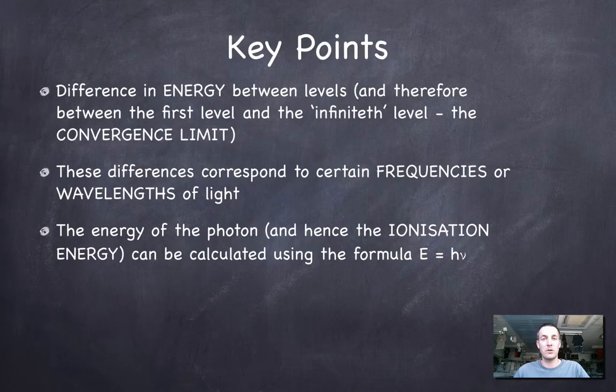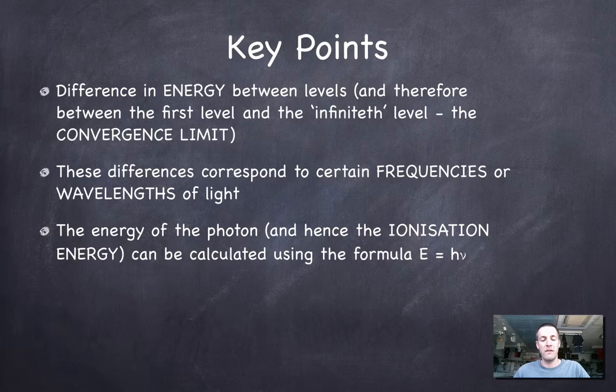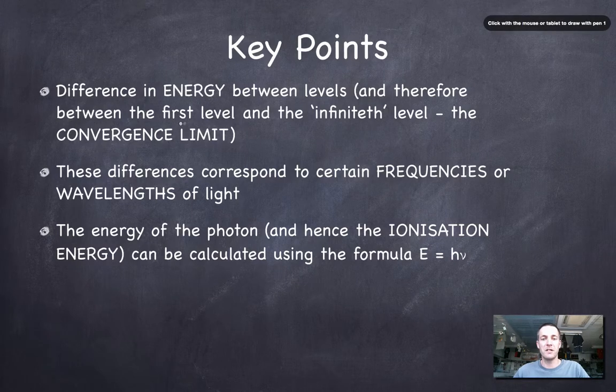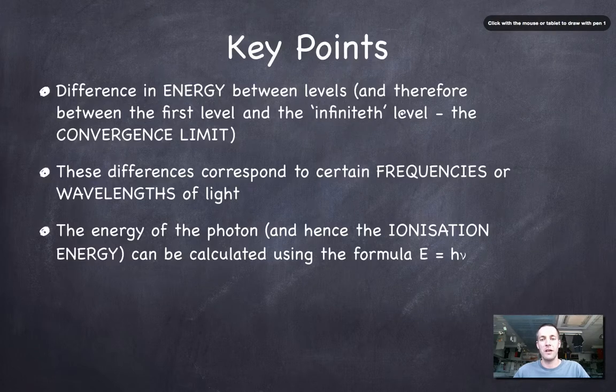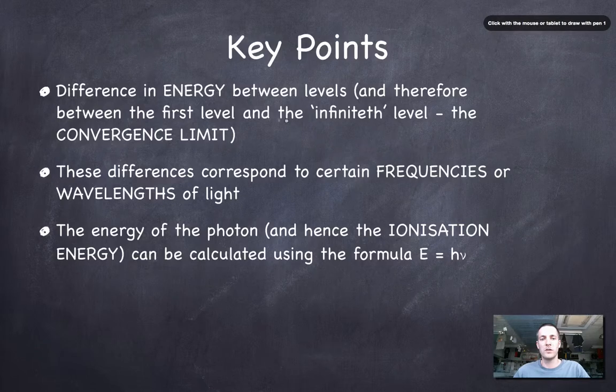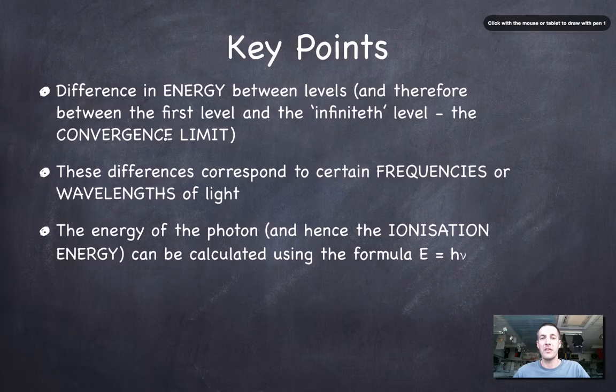So the key points that we've covered here is, as we know before, there's a difference in energy between levels. And therefore, if you think about it, there must be a difference in energy between the first level and this infinite level that we've talked about. And we can find what this difference is by looking at the light that we see at the convergence limit in our spectrum.